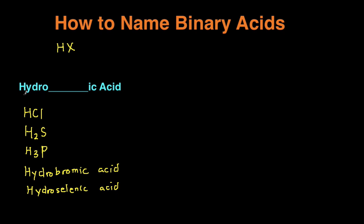The rules for naming binary acids, it's right here in blue. So you just write the word hydro, and then write the root of the element ic at the end of it, and then acid.